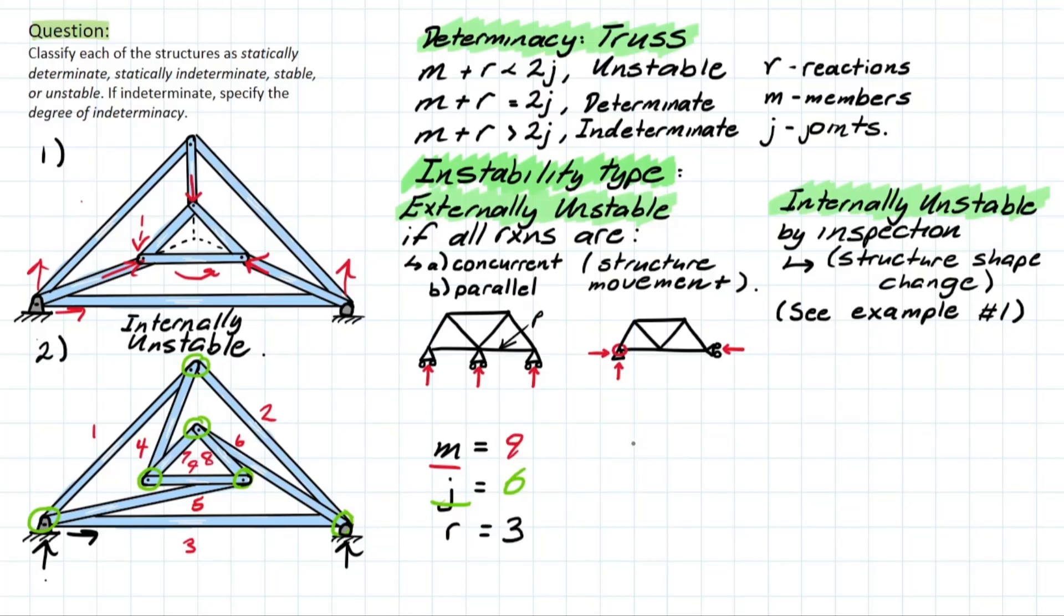Now, using this equation, we're just going to plug and chug. We have 9 plus 3 is going to be equal to 2 times J, which is 6. We have 12 equals 12. Therefore, the structure is determinate.